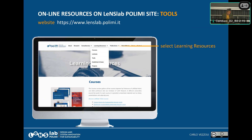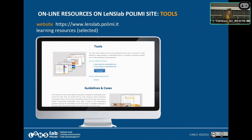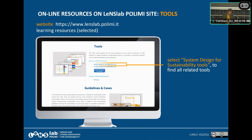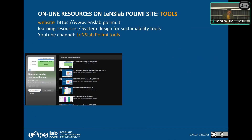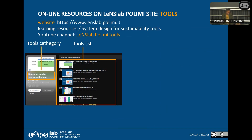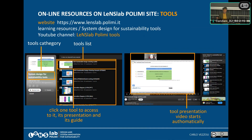What else can you find there? You can find tools. In Learning Resources, click on Tools. There are two types: System Design for Sustainability tools and Product Design for Sustainability tools. Since we work at a system level, click on System Design tools and you will find a list of tools. Click on a tool and there is a tool presentation. You can click to download either the tool itself or a tool guide.